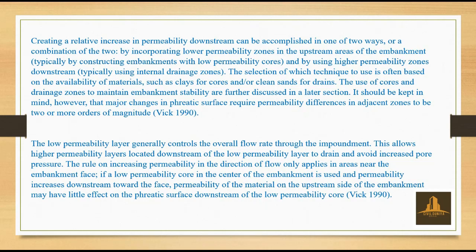Increasing relative permeability downstream can be accomplished in one of two ways or a combination: by incorporating lower permeability zones in the upstream areas of the embankment — typically by constructing embankments with low permeability cores — and by using higher permeability zones downstream, typically using internal drainage zones. The selection of which technique to use is often based on the availability of materials such as clays for cores or clean sands for drains.